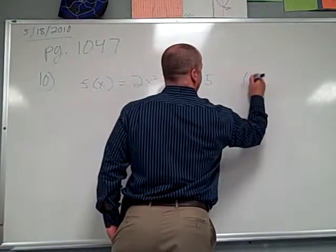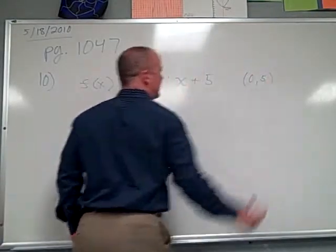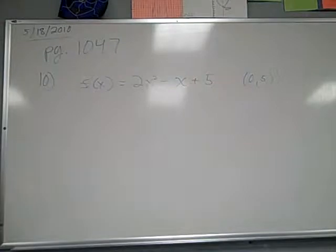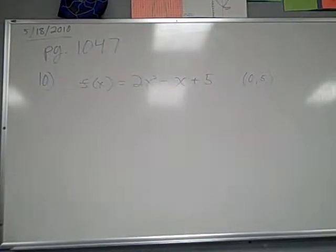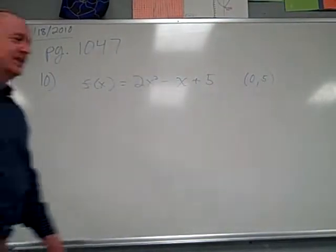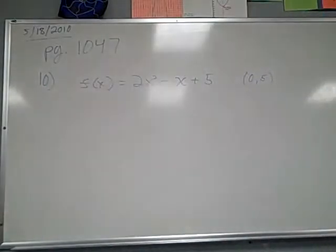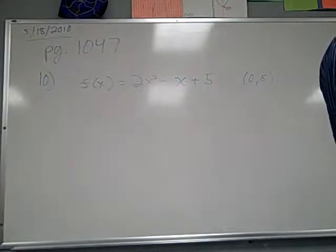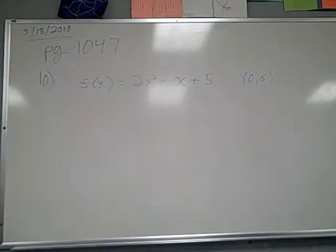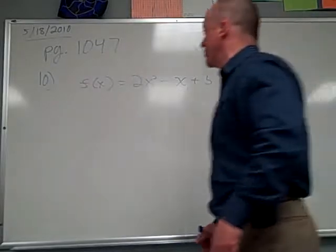And was it find the equation of the tangent line? It was a two-part thing. Let's get this going quickly here. 1047. And we are... I don't know. It's 2x squared. Let's see what they are. Number 10. Find the slope of the tangent line. Find the slope equation of the graph. Okay. First thing.